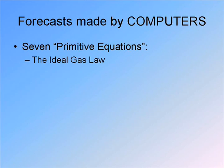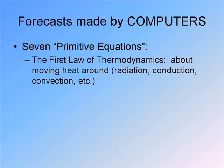Another one of the seven primitive equations is the first law of thermodynamics. This is a very complicated equation that combines all the stuff we learned in the first unit of the course about heat. It predicts how the temperature is going to change in terms of things like radiation, conduction, convection, etc. We don't learn the equation in this class because it takes a piece of paper to write down — it's huge. But we learned the processes behind it.